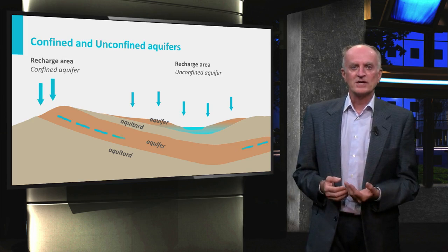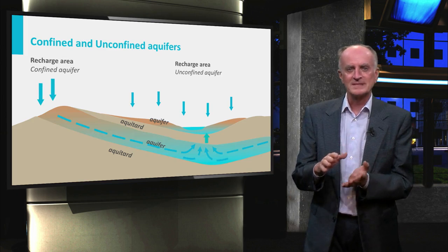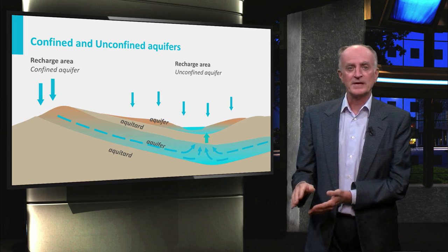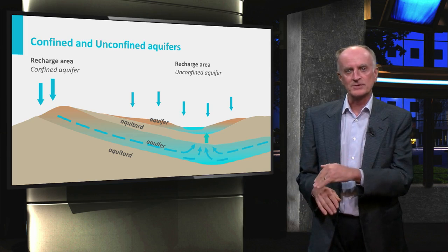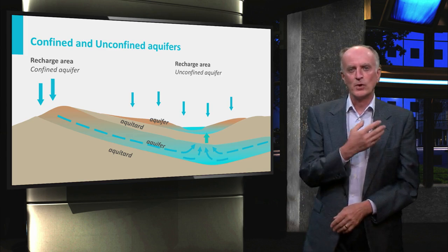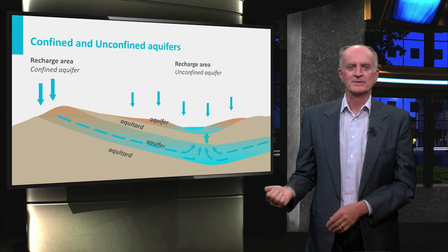If in the recharge area permeable layers are found which dip steeper than the topography, and therefore continue deep in the subsurface, the waters will flow along these layers forming confined aquifers.